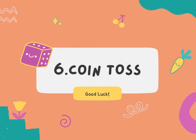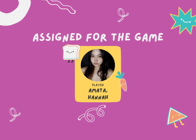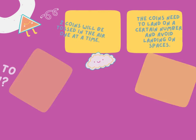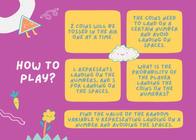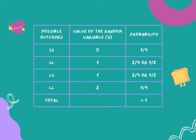This game is coin toss. Here's how you can play it. Two coins will be tossed in the air one at a time. The coins need to land on a certain number and avoid landing on spaces. L represents landing on the numbers and S for landing on the spaces. What is the probability of the pair of coins landing on the numbers? Find the value of the random variable Y representing landing on a number and avoiding the spaces, and find the value of the possible outcomes and the probability.